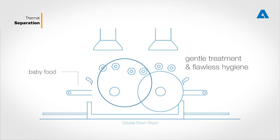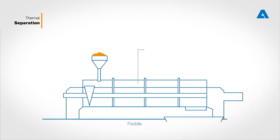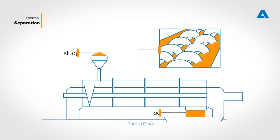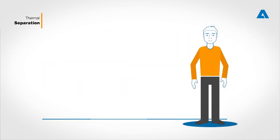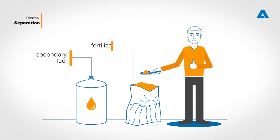And what's more, thermal drying also plays a major role in the environmental industry, like in wastewater treatment and recycling. Our so-called paddle dryer extracts water from the sewage sludge, which is then suitable for use as a secondary fuel for electricity or as fertilizer.